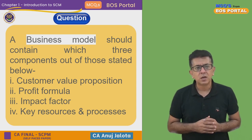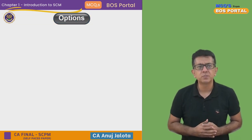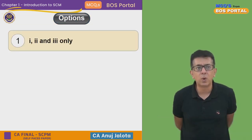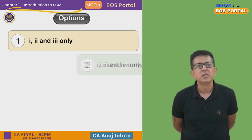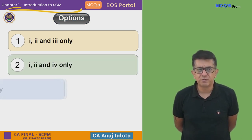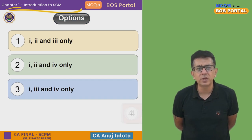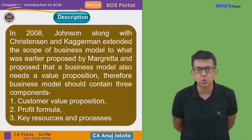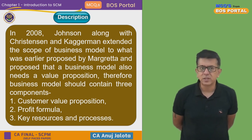The four options are: option one — one, two, and three only; option two — one, two, and four only; option three — one, three, and four only; option four — two, three, and four only.